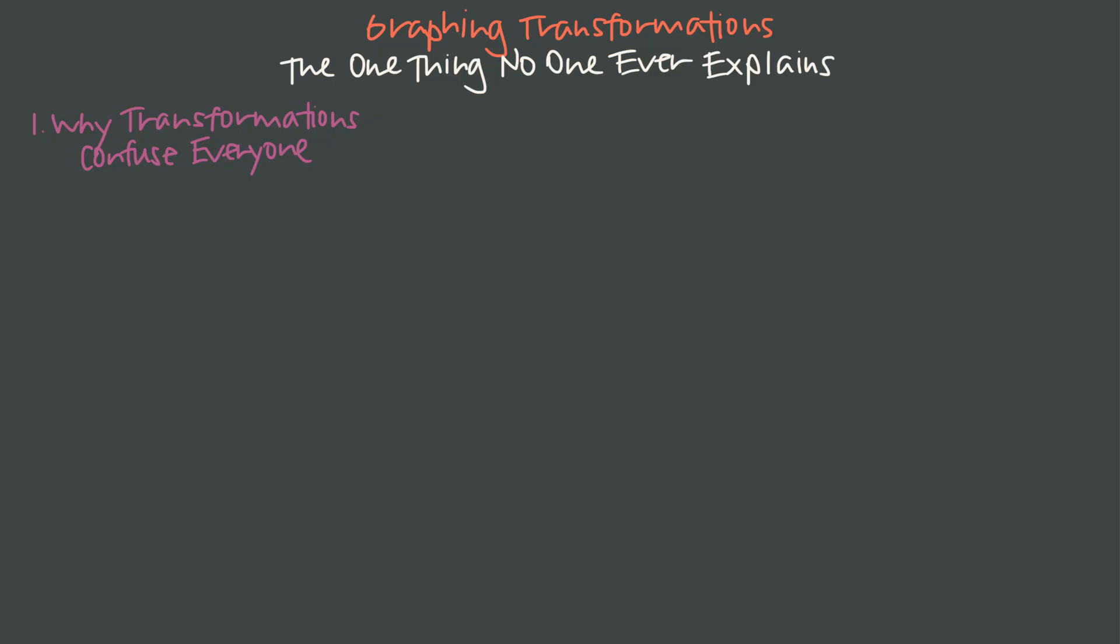So let's start by calling out what makes this hard. Transformations are so confusing because there's so many disconnected rules. We talk about shifting up, shifting down, shifting left and right, stretching, reflecting, and there's so many things to keep in your head all at once.